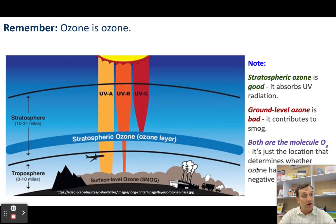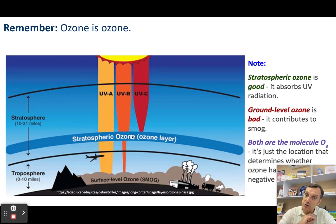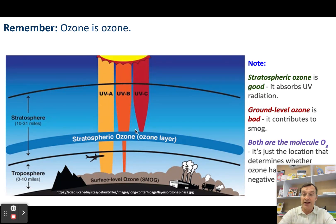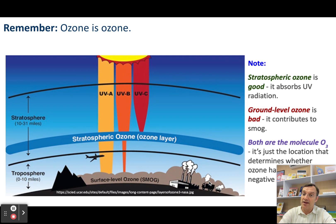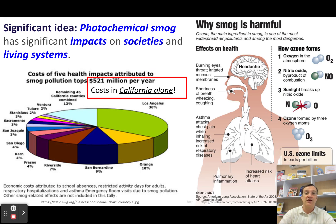Remember, ozone is ozone — it's still O3. Ozone in the stratosphere, where we have the ozone layer, is good ozone because it filters out that ultraviolet radiation. Whereas ozone in the troposphere, down here at the surface of the planet, is bad ozone because of the way it reacts with living organisms and different materials.